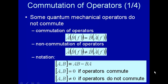A useful concept in quantum mechanical operators is commutation of operators. It's very similar to the commutation rule when we talked about algebra. Commutation of operators is where you take an operator B and operate on a function to get another function, then you operate with another operator A. If you reverse the order and it doesn't matter whether you first do B then A, or A then B, and you get the same function after those two operations, then you say the two operators commute.